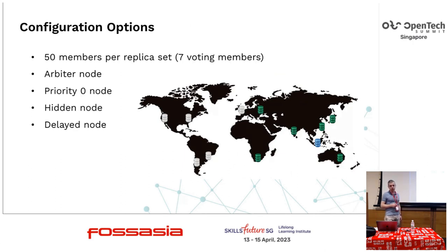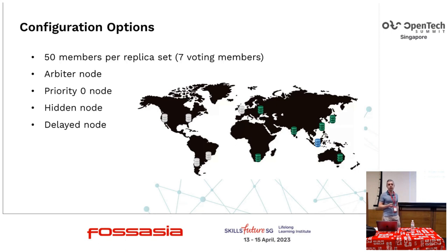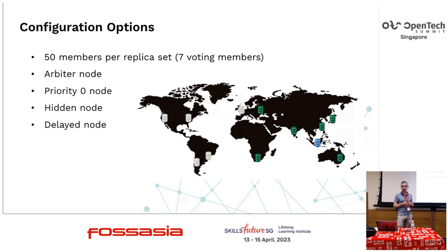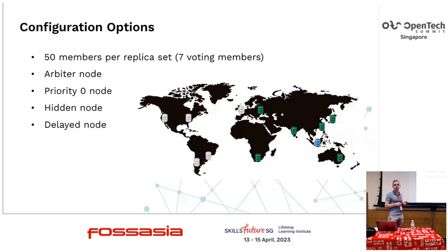Some configuration options for a MongoDB replica set: the limit of nodes in a single replica set is 50, and seven of those can be voting members. There is an arbiter node type that only participates in elections and holds no data. A priority zero node is a secondary that doesn't participate in elections and will never be elected as primary, but it has votes. A hidden node is also a priority zero node, but it is not visible to the application from a driver perspective. A delayed node is a secondary with replication delay, typically used for disaster recovery and taking backups.